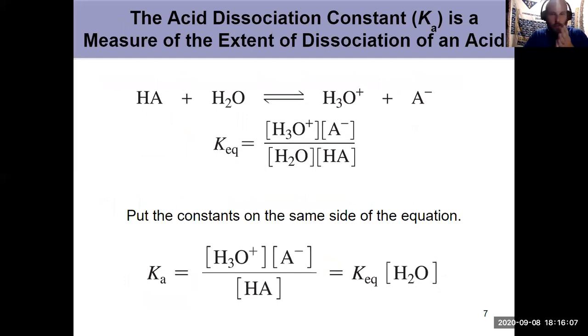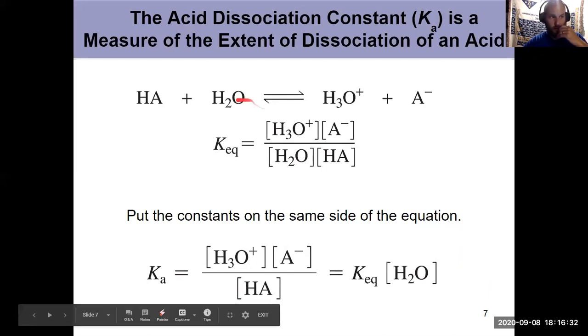We also know how to measure equilibrium constants. Ka is the acid dissociation constant, which tells us how much that acid has dissociated. It's kind of a measure of how strong the acid is. We do that by doing products over reactants. For anything, this is just a general KEQ. Don't let that water throw you off.